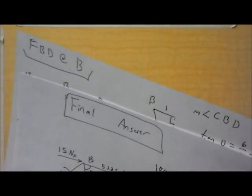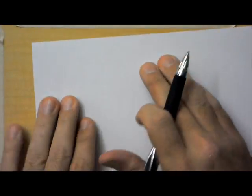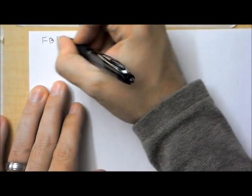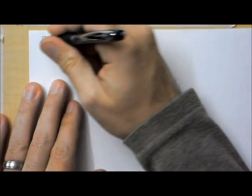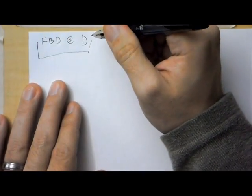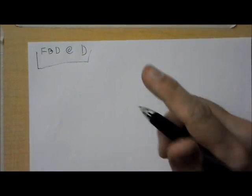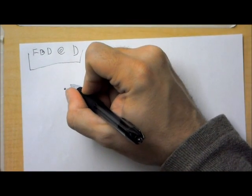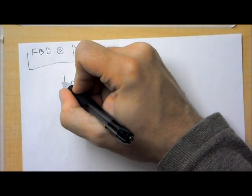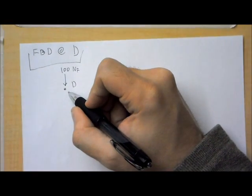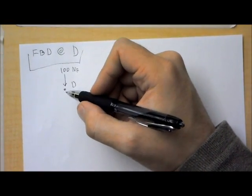I'll just pick D. So, label my work free body diagram as D. Okay. So, we have point D, and we have 100 newtons of force coming down on D. That's the only external force.